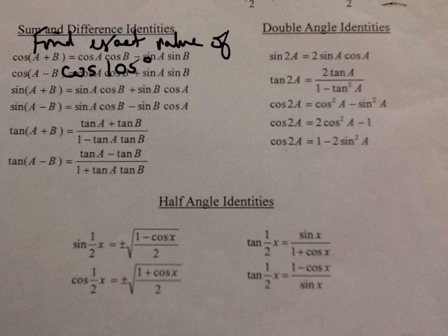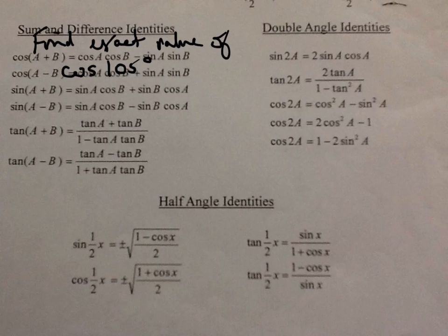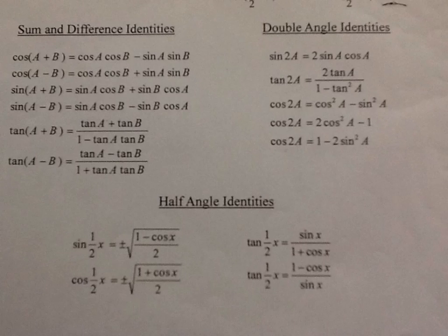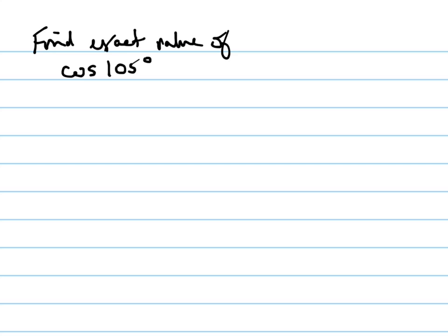So what we do is use this formula right here - cosine A cosine B minus sine A sine B. Notice that 105 is equal to 45 plus 60.